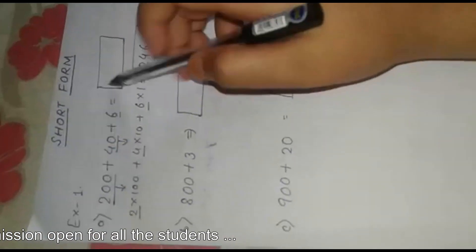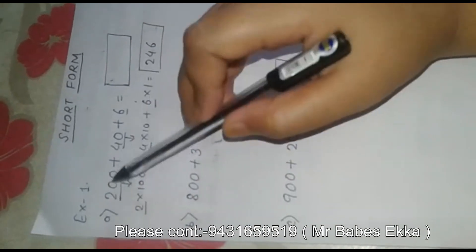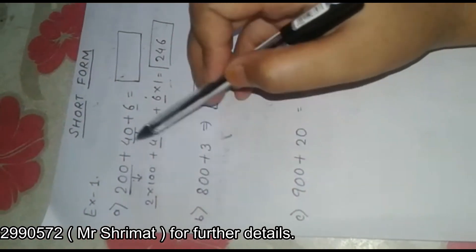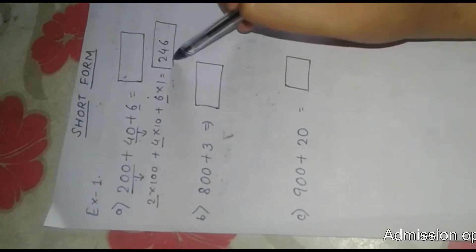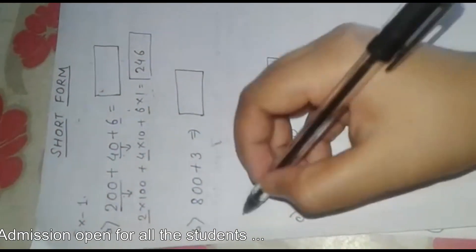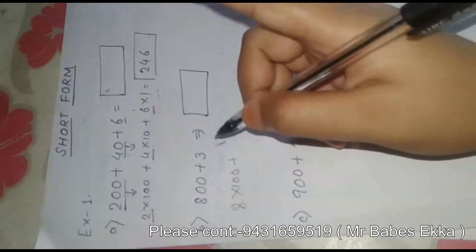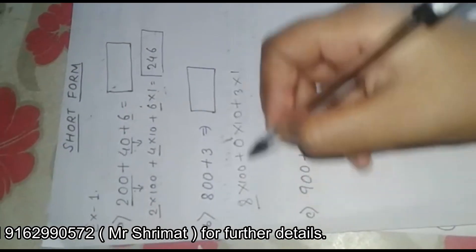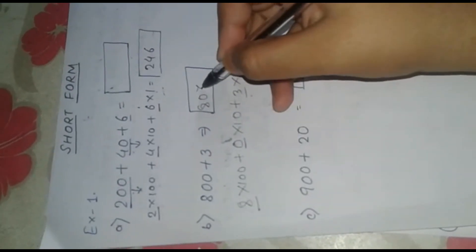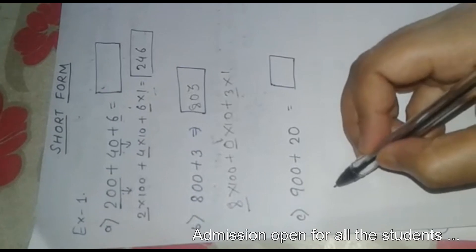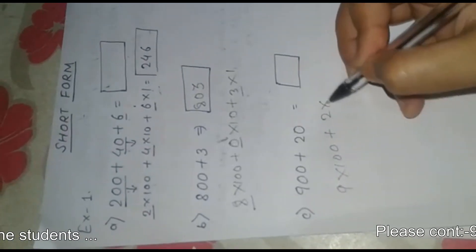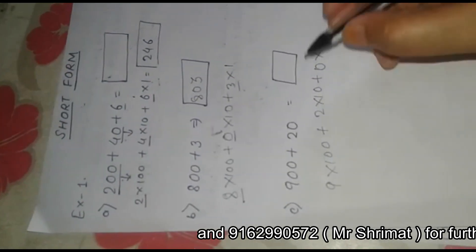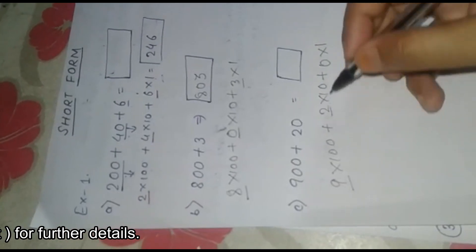Now we will learn to write short form. For example, 200 plus 40 plus 6 — we write it as 2 into 100 plus 4 into 10 plus 6 into 1, so the short form is 246. Another example: 800 plus 3 — we write 8 into 100 plus 0 into 10 plus 3 into 1, so the short form is 803. Similarly, 9 into 100 plus 2 into 10 has no digit in the ones place, so we write 0 into 1, giving us the short form 920.